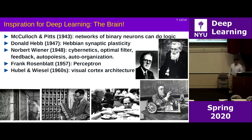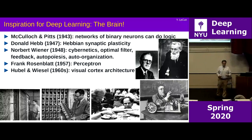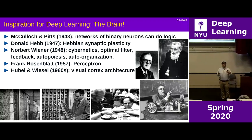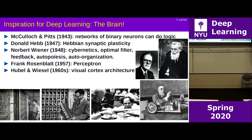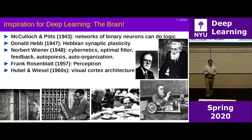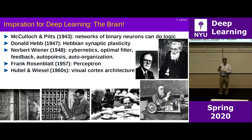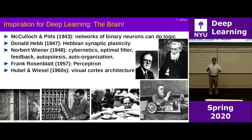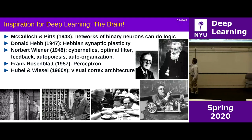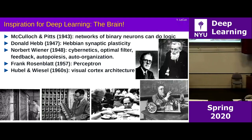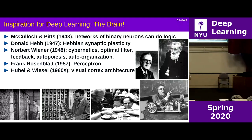That led Frank Rosenblatt to imagine learning algorithms that modified the weights of simple neural nets. The perceptron was a physical analog computer — a gigantic electromechanical machine with wires, optical sensors, and neurons with motorized potentiometers as trainable weights. What he's holding in his hand is a module of eight weights with motorized potentiometers on them.